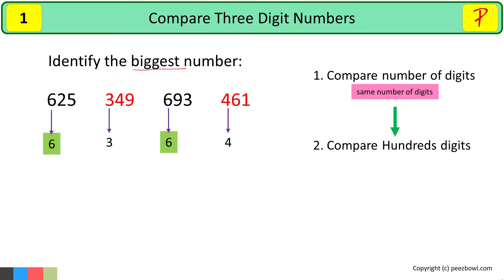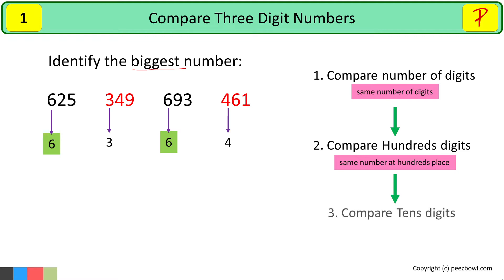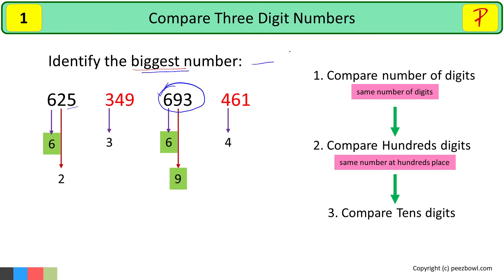Now we need to compare 625 and 693, as both these numbers have the same digit at the hundreds place. As per the rule, we will now compare the digits at the tens place. In 625 we have 2 at the tens place, and in 693 we have 9 at the tens place. As 9 is bigger than 2, 693 will be bigger than 625. So 693 is the biggest number among all these numbers.